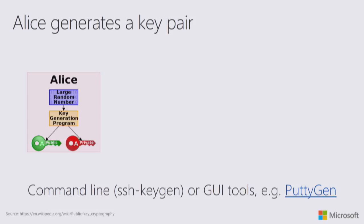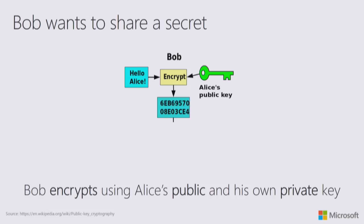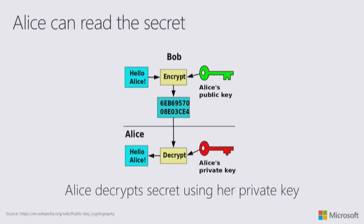You can generate a key pair quite easily from the command line using SSH keygen. Or, if you're a Windows user, you'll probably want to use a tool called Puttygen, which is a GUI tool for managing your keys. Now, Alice has a private and public key pair and Bob wants to share a secret. Alice gives Bob her public key. Bob then encrypts the message — 'Hello Alice' — using his own private key and Alice's public key. This creates a hashed file that you can share in the open, and Alice can only decrypt that using her private key. Without a matching private key, it is very difficult, if not completely infeasible, to decrypt the secret.